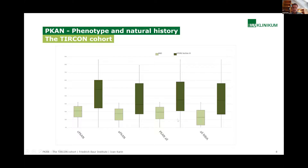Looking at the UPDRS scale — which is actually a Parkinson scale but is quite useful for assessing motor impairment — the baseline value for all PKAN is quite comparable to the other NBIA diagnoses.